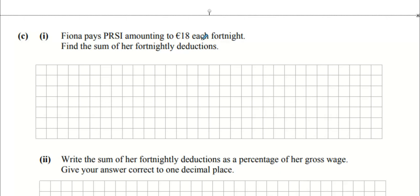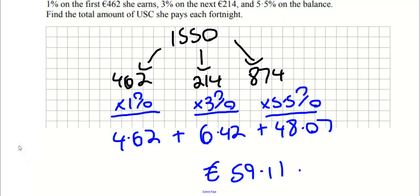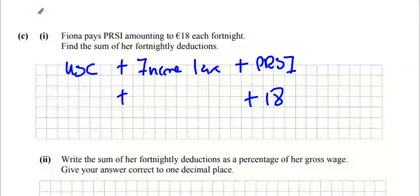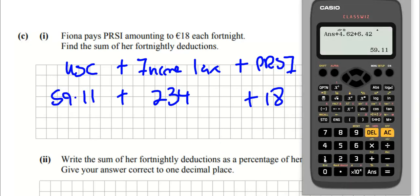Fiona also pays 18 euro each fortnight for PRSI. Find the sum of her fortnightly deductions. What are the fortnightly deductions? USC, we also have income tax, and PRSI. That's your 18 quid there. 59.11 and 234. We're going to add all three together: 311 and 11 cents.